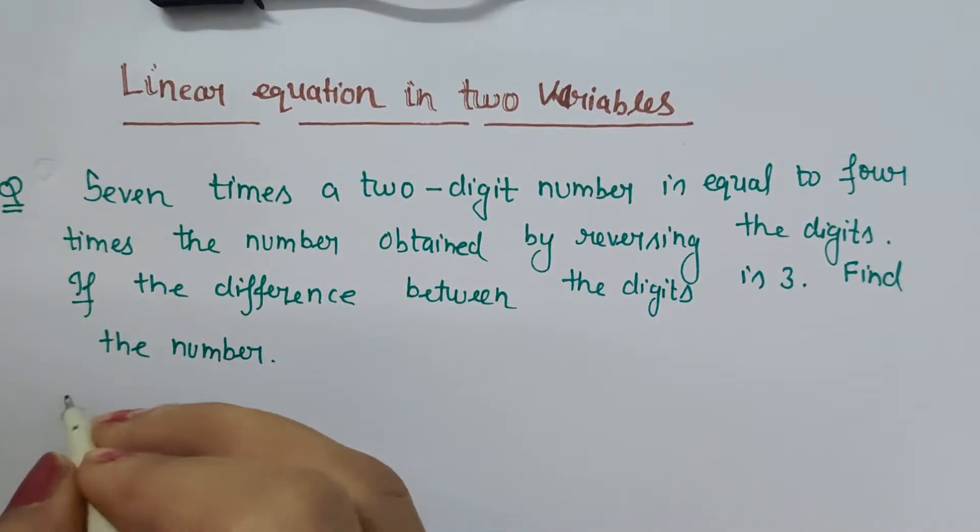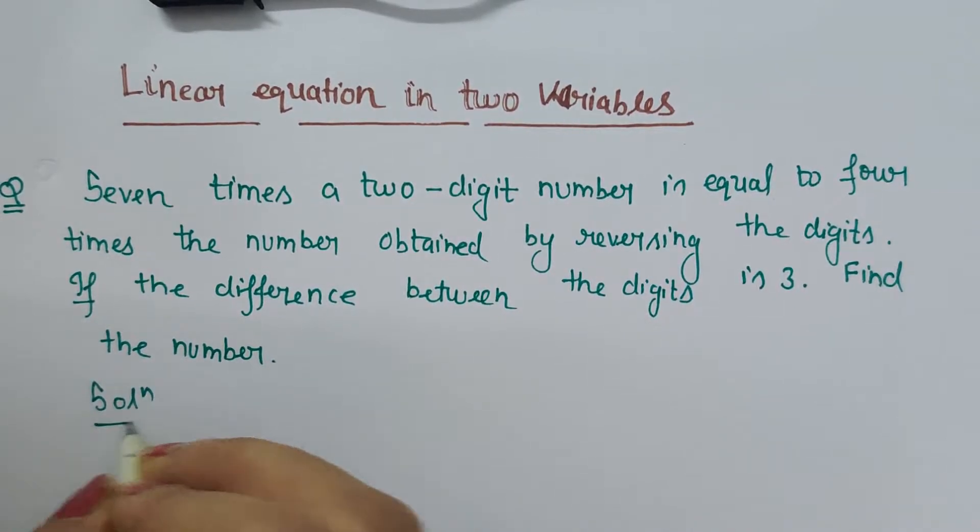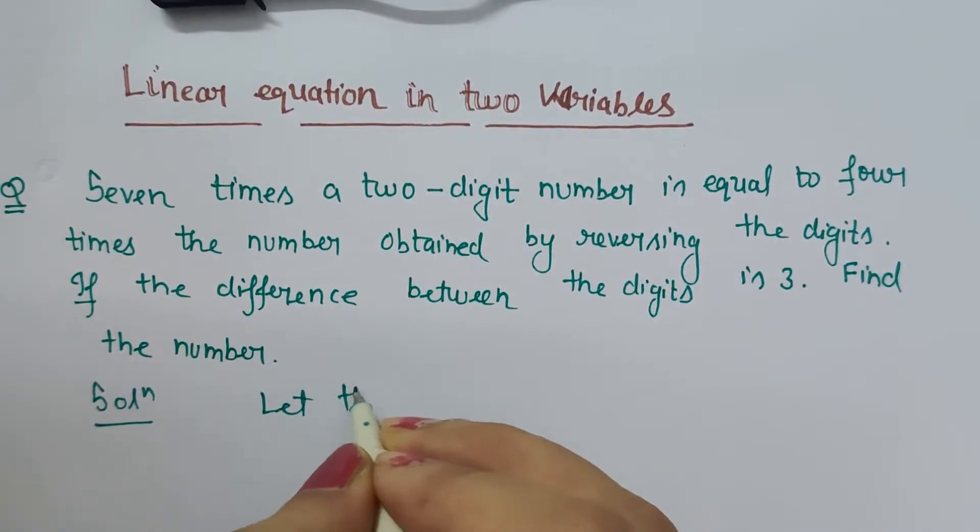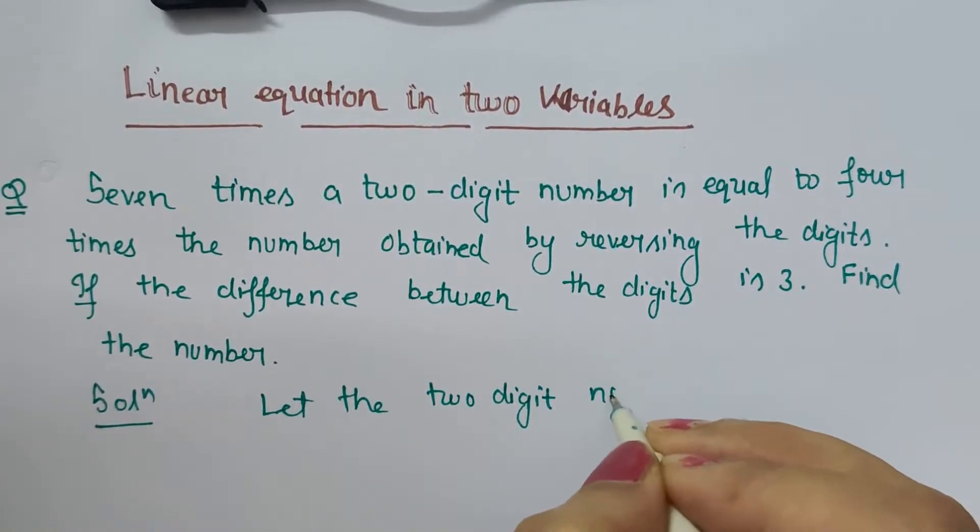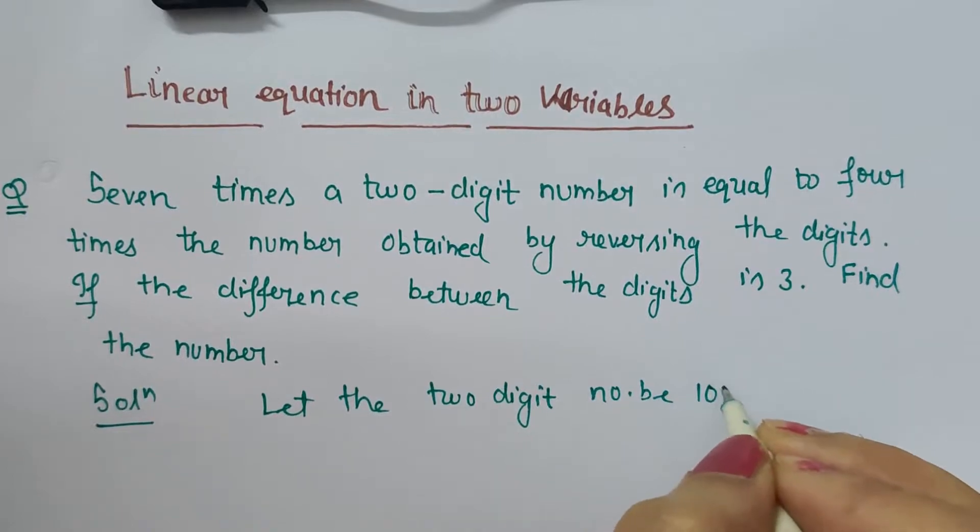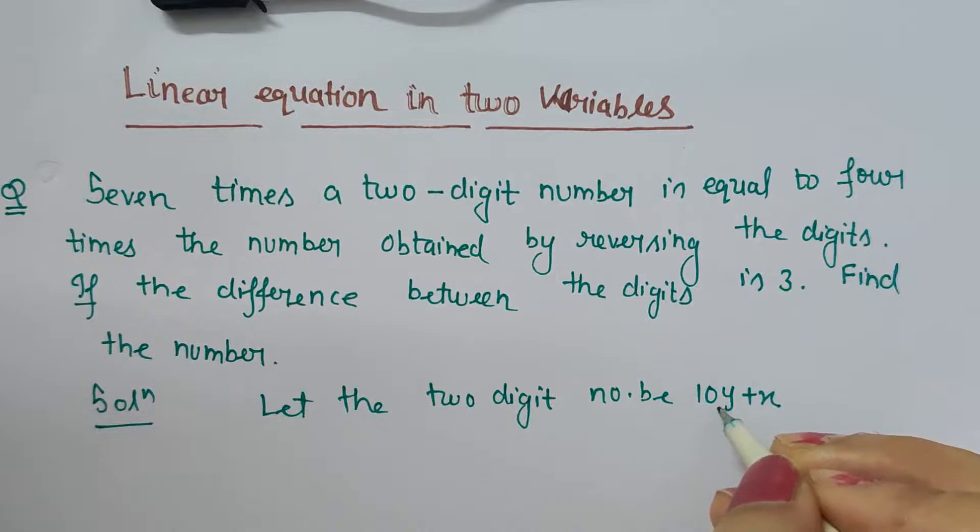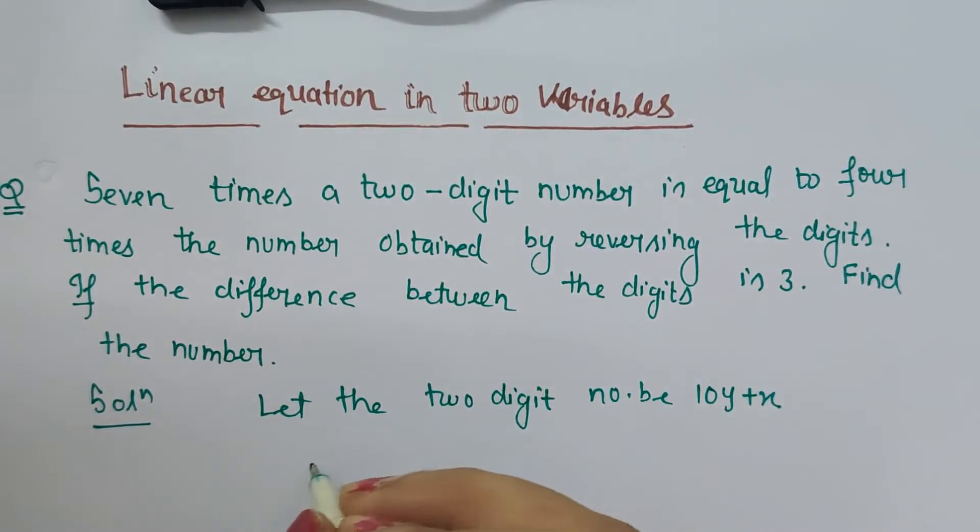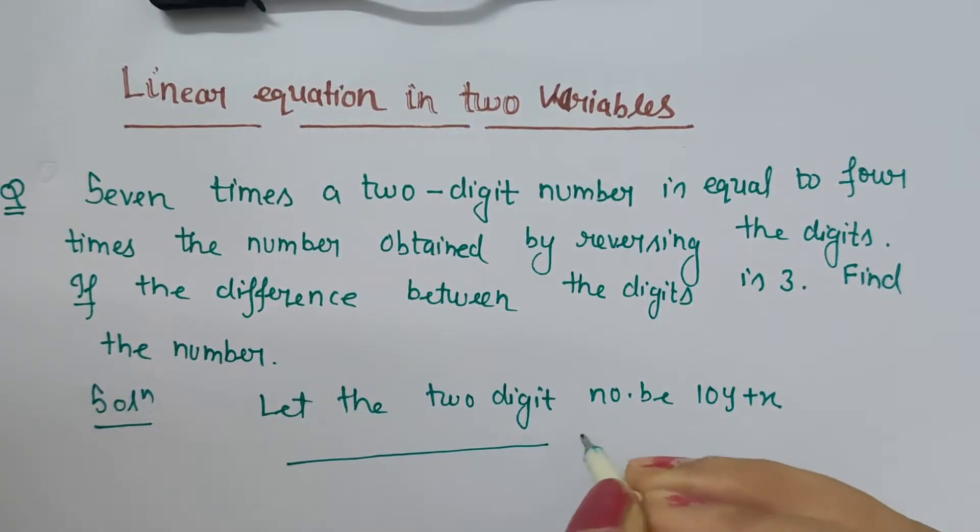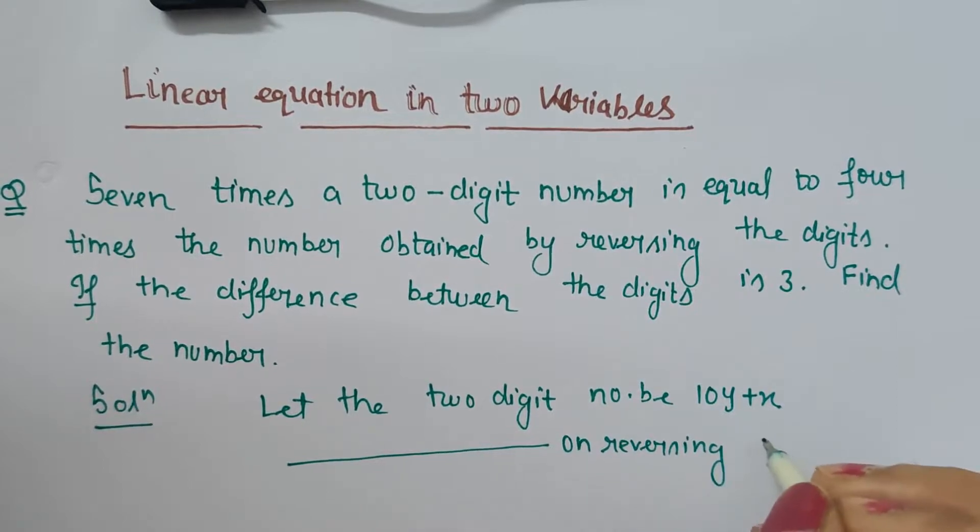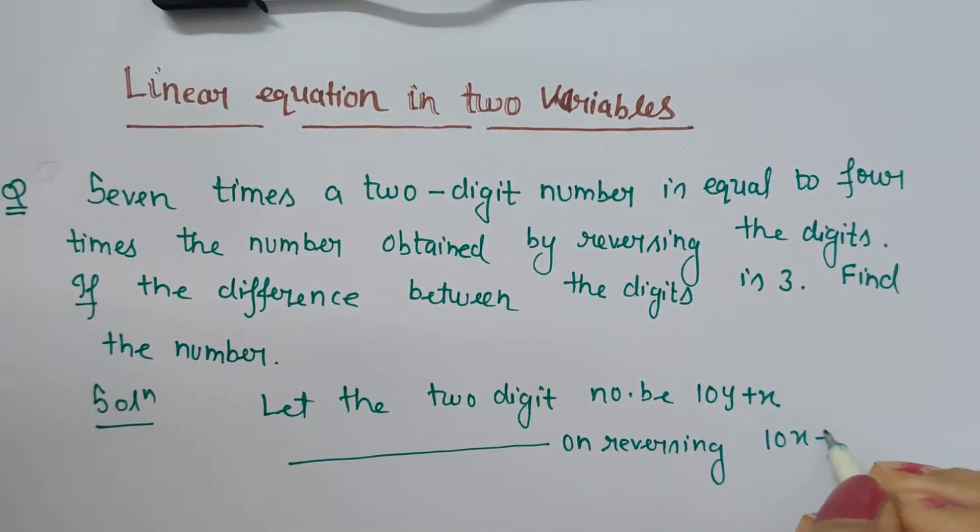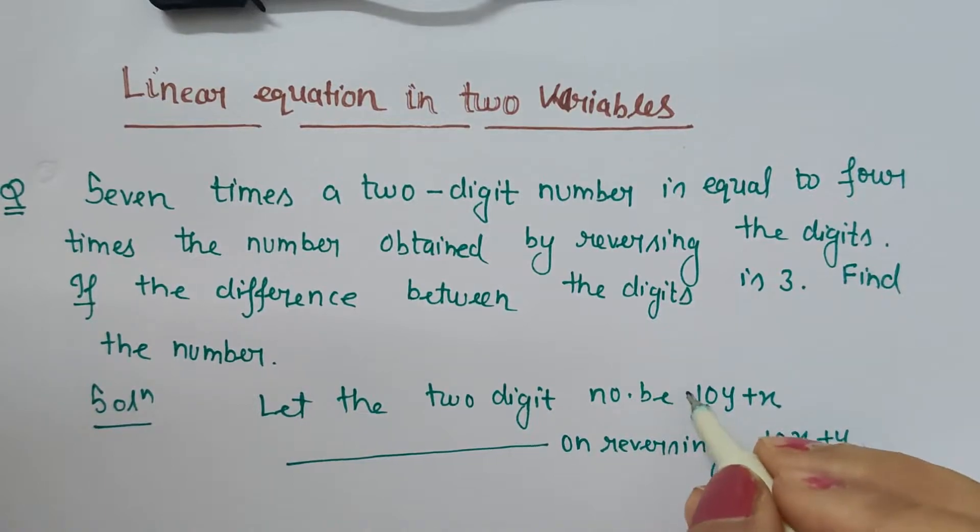So what do we have to do here? First we have to assume the two-digit number. Let's write: let the two-digit number be 10y plus x. Here x is at unit place and at tens place we have y. Let the two-digit number on reversing the digits be 10x plus y.